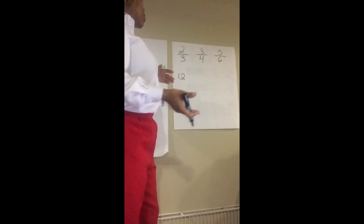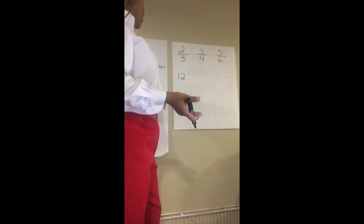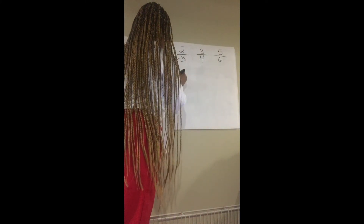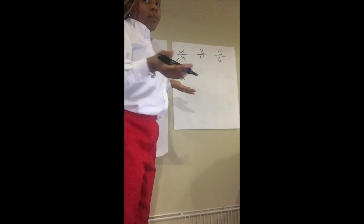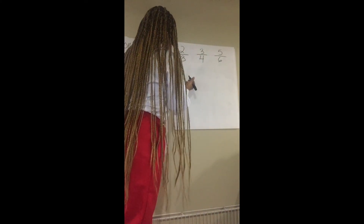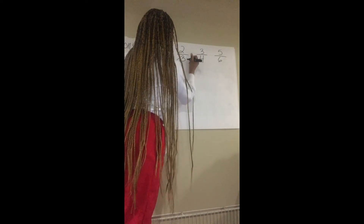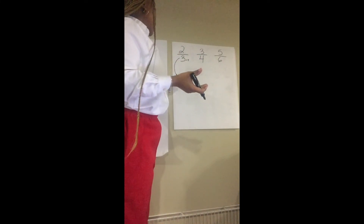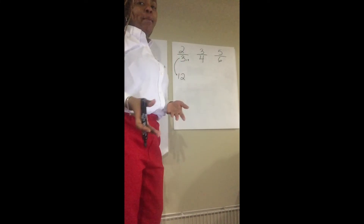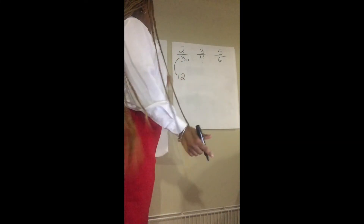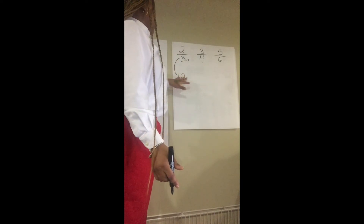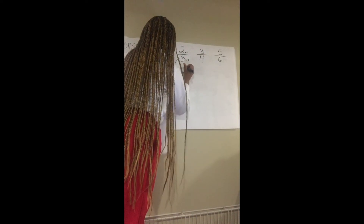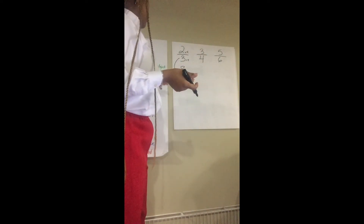I'm going to start off with two thirds, since that's the first one. How did we go from three to twelve? We multiply. Three times what gives you twelve? Three times four gives you twelve. Whatever we do to our denominator, we also do to our numerator. Since we multiplied three times four to get twelve, we're going to multiply two times four — and two times four gives us eight.